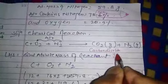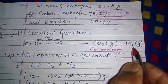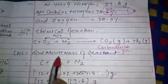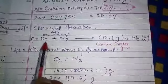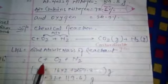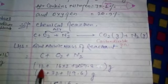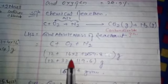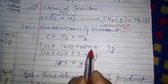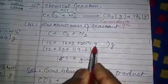So the total atomic mass of reactant—reactant is C + O2 + N2. So C's value, the atomic mass, is 12. Oxygen's atomic mass is 16, given, multiply by 2, that's 32. And nitrogen is 59.8, so multiply by 2, that's 119.6 gram.